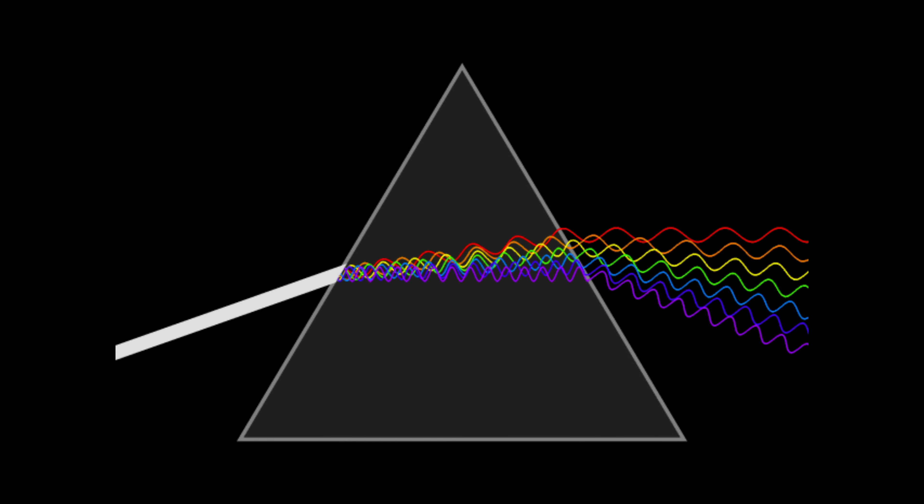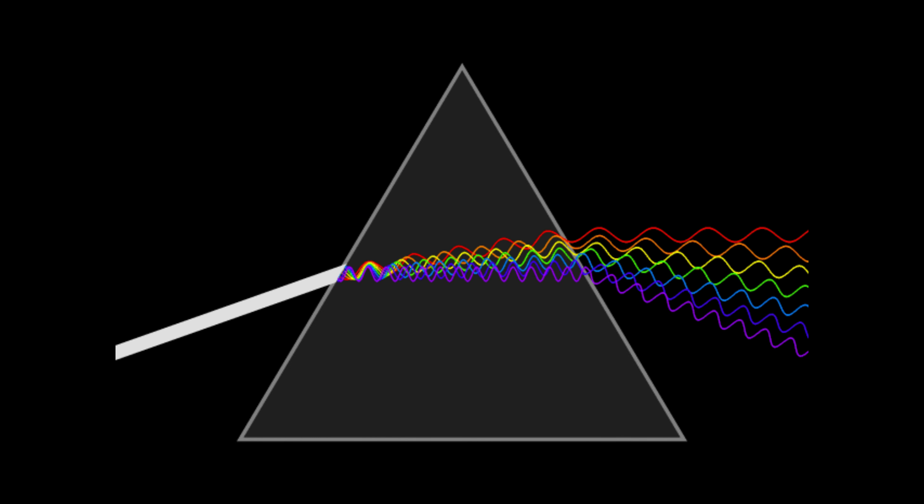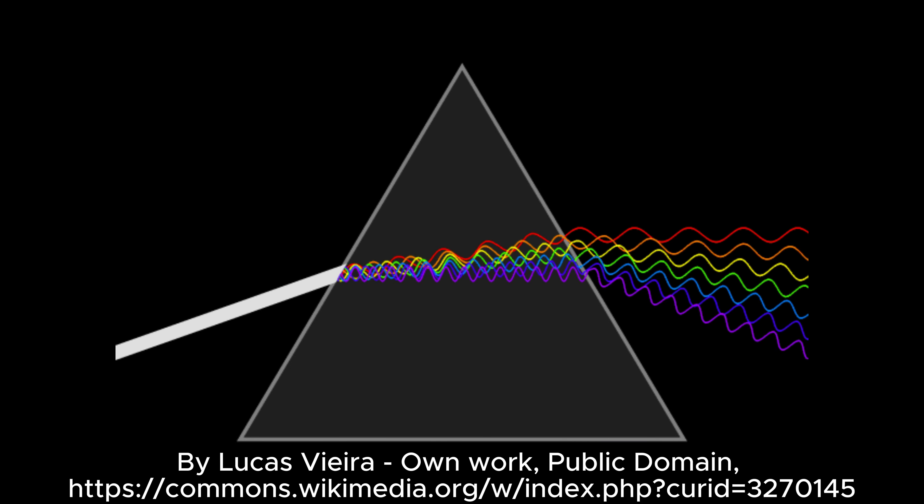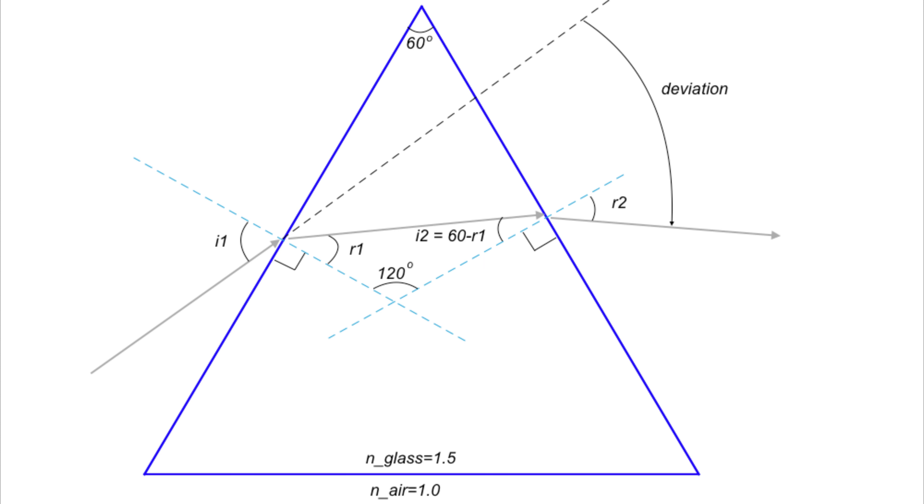The degree of refraction varies with the wavelengths of each light wave. Shorter wavelengths, which correspond to violet and blue light, have higher energy levels and refract more than longer wavelengths, such as yellow, orange, and red light, which have lower energy levels.